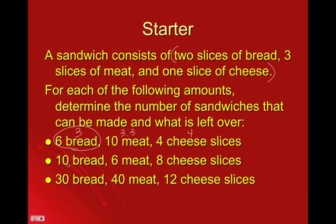Going on to the second situation: if we have ten slices of bread, we can make five sandwiches. Six slices of meat means we can make two, and eight slices of cheese means we can make eight. So, the limiting part is the meat, because we can only make two sandwiches. That leaves us using four slices of bread, which means six slices of bread are left over.